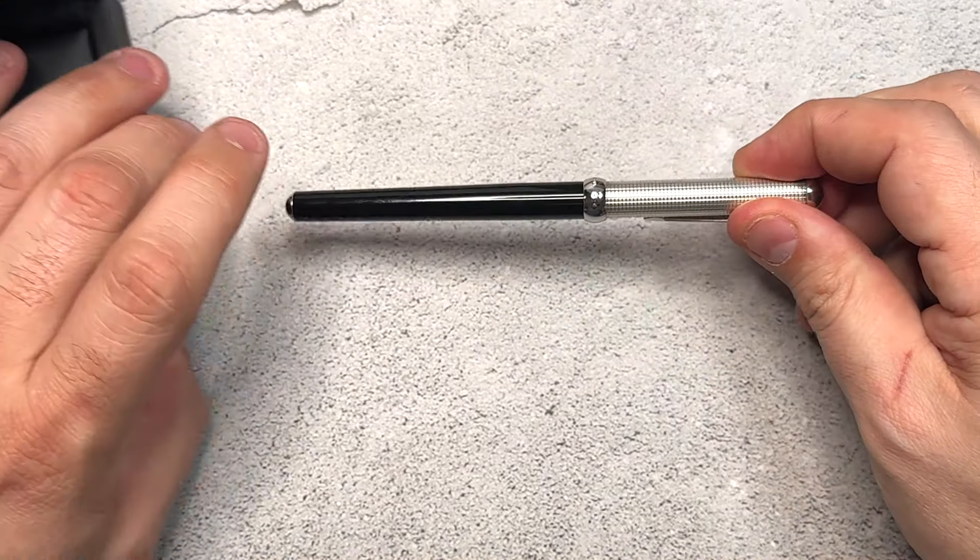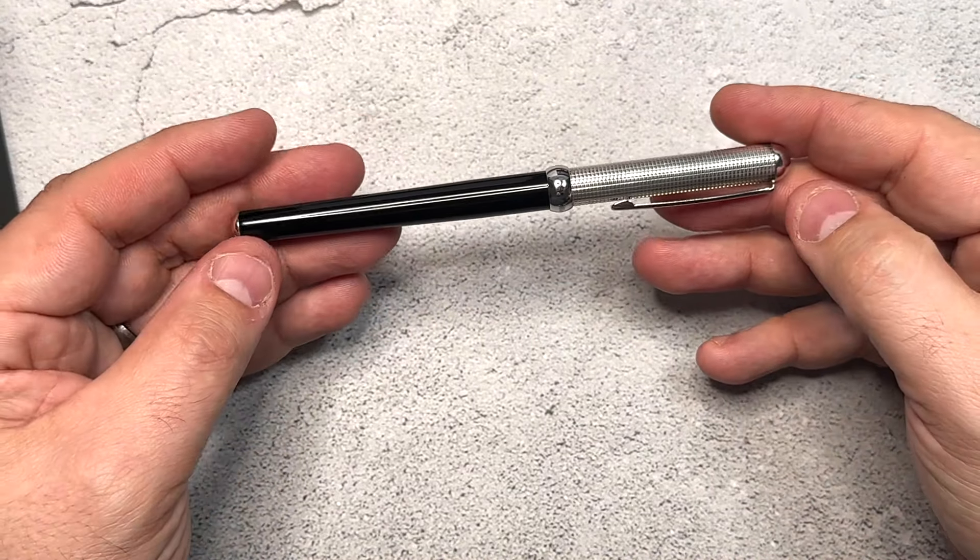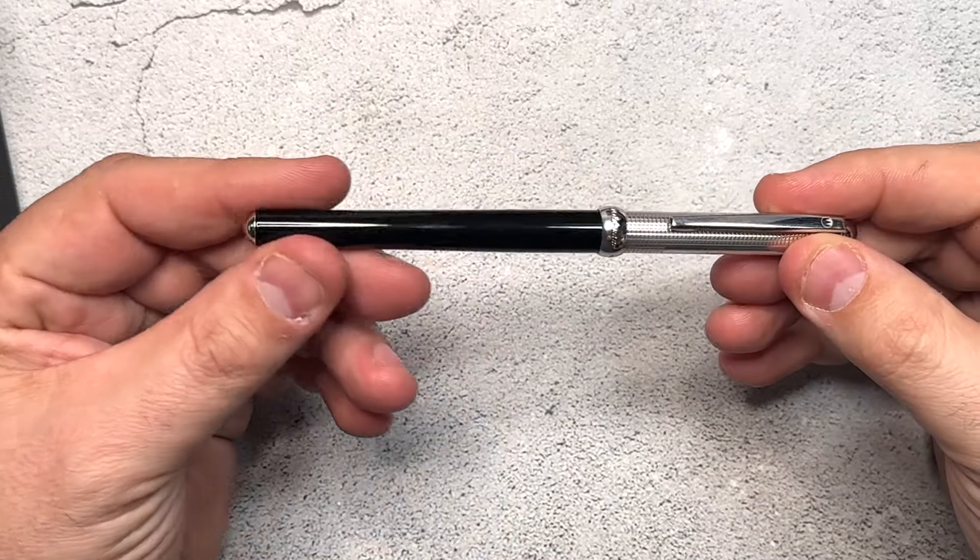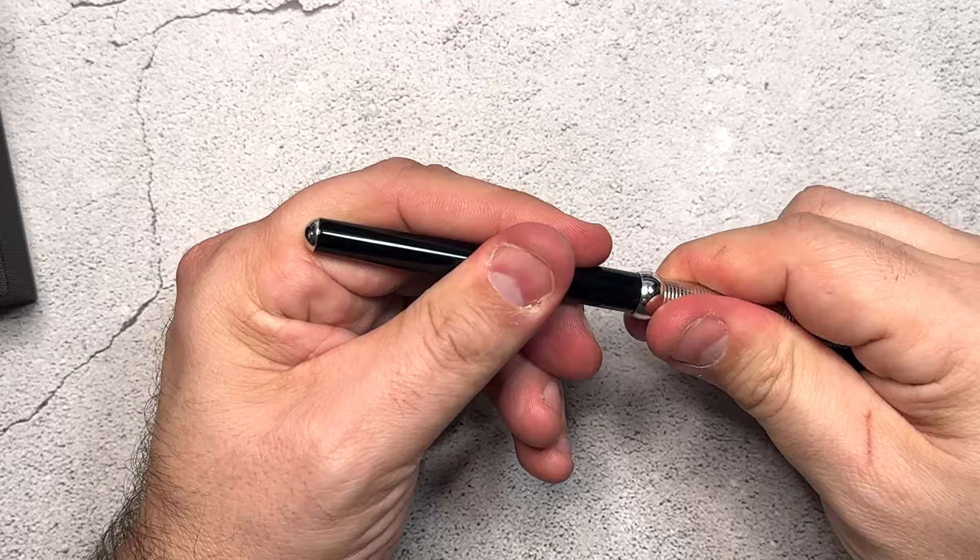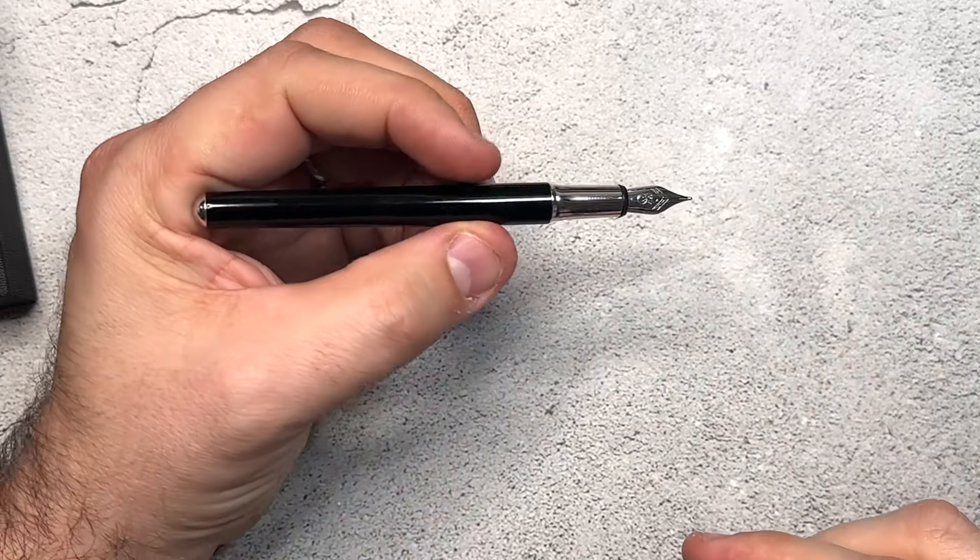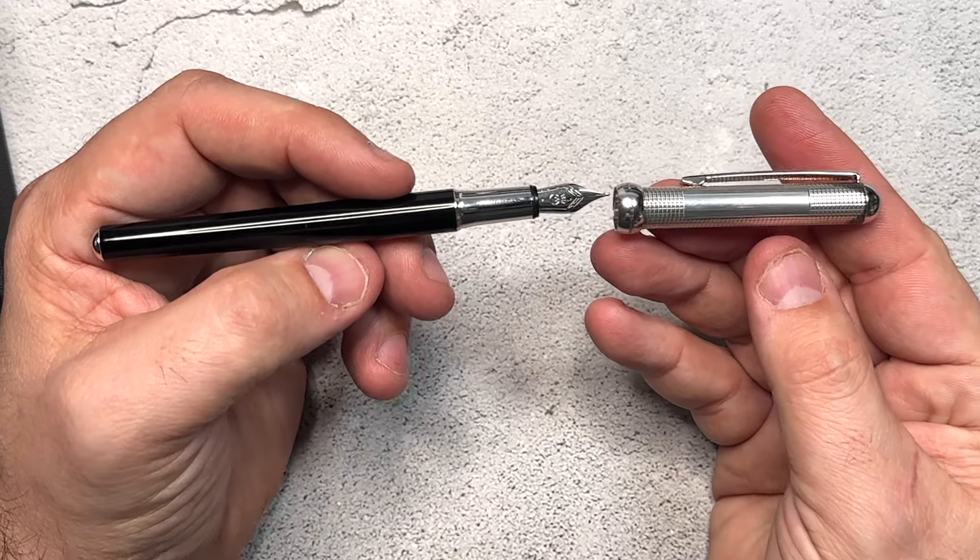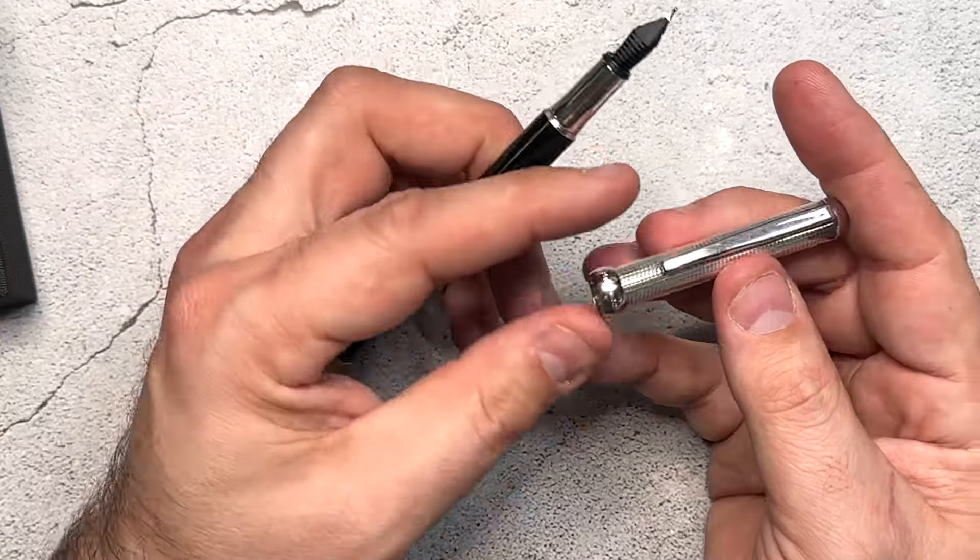So inside of this one here we have the Waldman Chess. This pen has a beautiful black lacquer on here. Super shiny, very smooth. I also love this too because the pen itself is just very thin. It's much thinner than any other pen that I have. You've got platinum plated hardware on top of here.